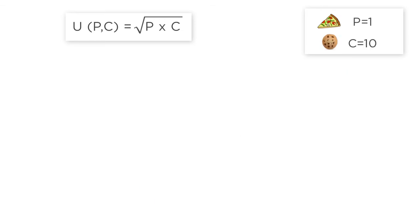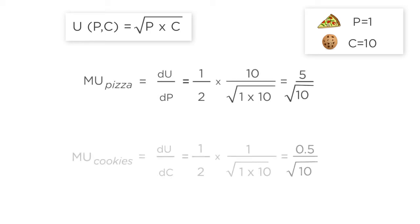When p equals 1 and c equals 10, the marginal utility of pizza is 5 over the square root of 10, and the marginal utility of cookies is 0.5 over the square root of 10.